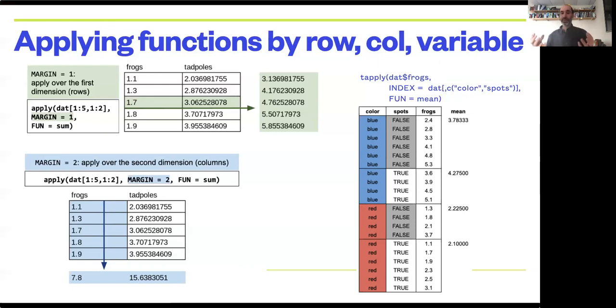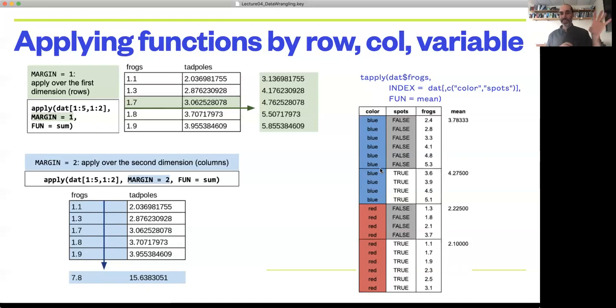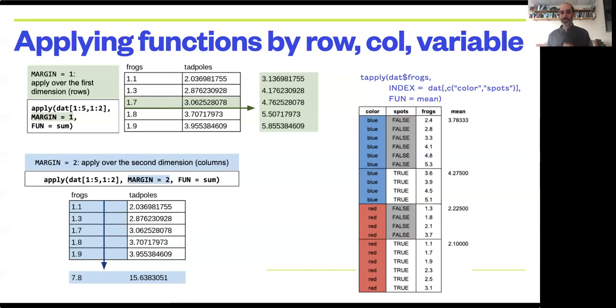And so it's going to come up with all the unique combinations of colors and spots. So it's going to say, I'm going to get non spotted blue frogs, spotted blue frogs, non spotted red frogs, spotted red frogs. And then it's going to apply the mean function to each of those groups.